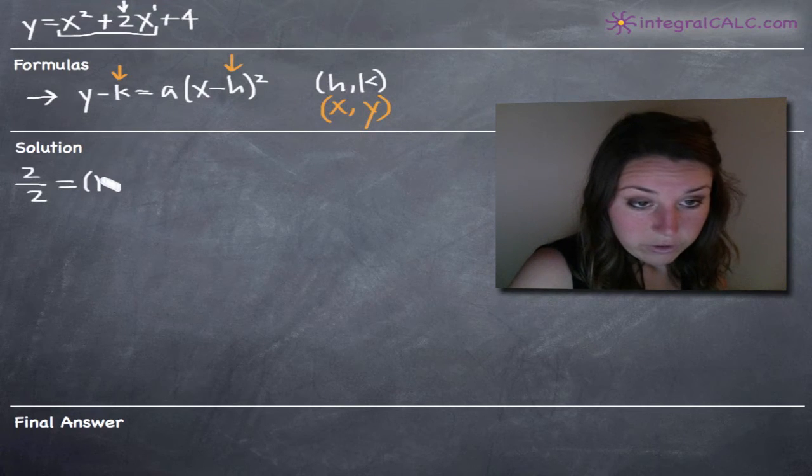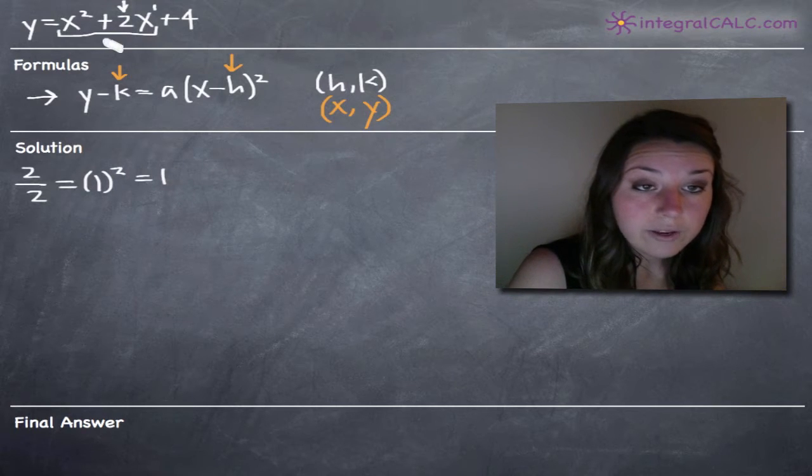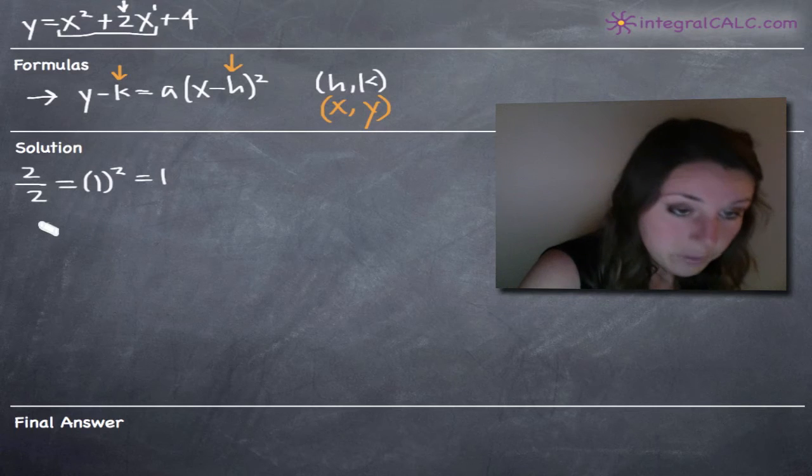Whatever we get for our answer, we square. So one squared is still one, which means we need to add one to x squared plus 2x to complete the square.